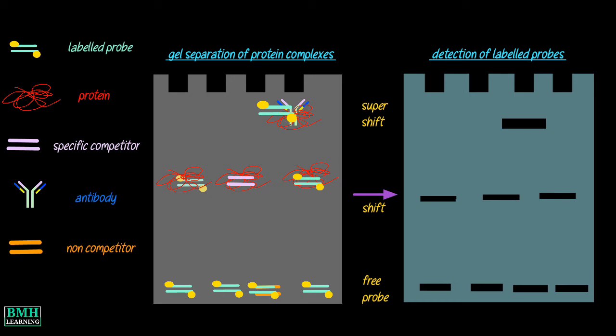How it works: a 32-phosphate labeled fragment of DNA containing the potential protein binding site is mixed with a protein of interest in a buffer system. Typically, a non-denaturing polyacrylamide gel is used. The gel is then dried before being exposed to autoradiography film. The binding of the protein causes the nucleic acid-protein complex to move slower than free nucleic acids.